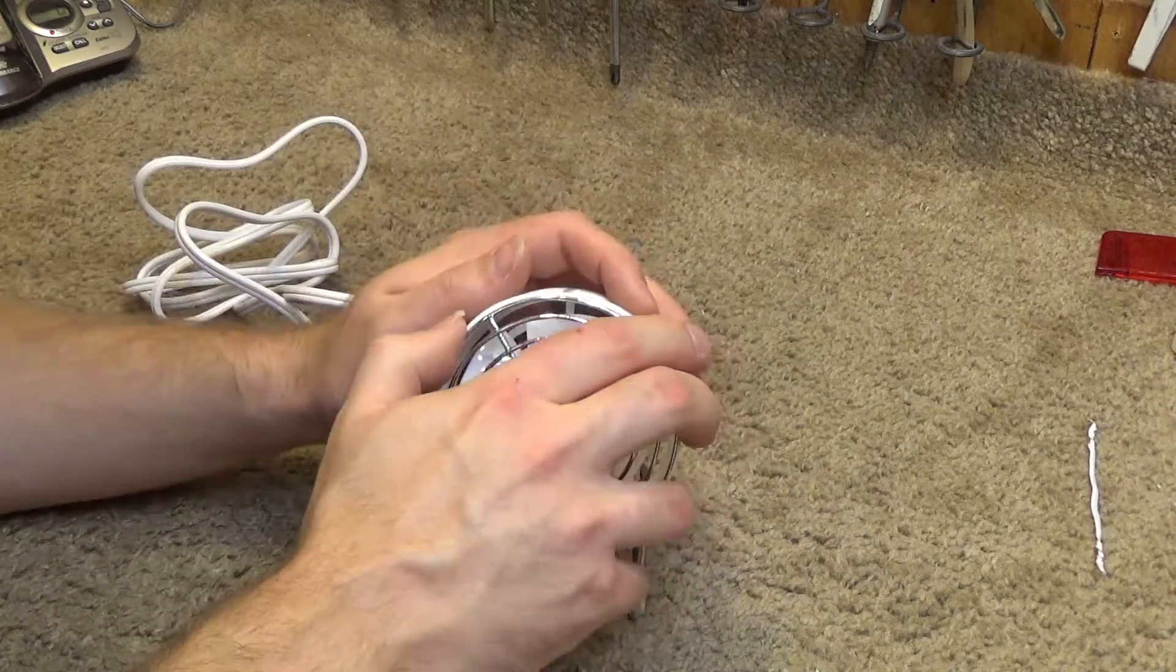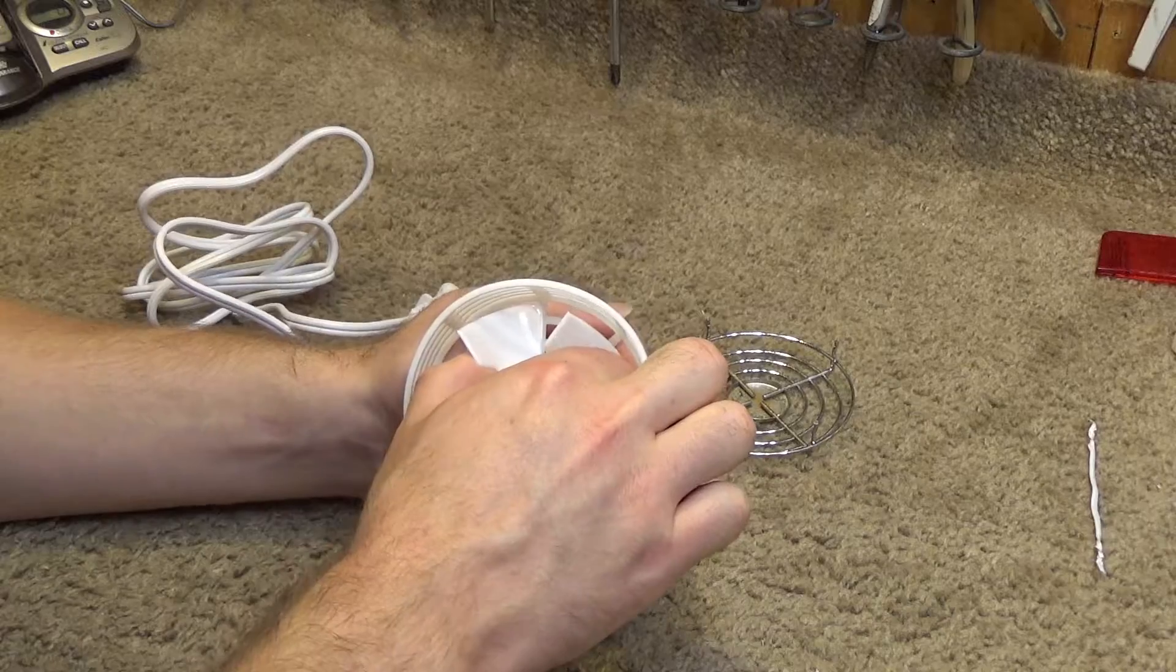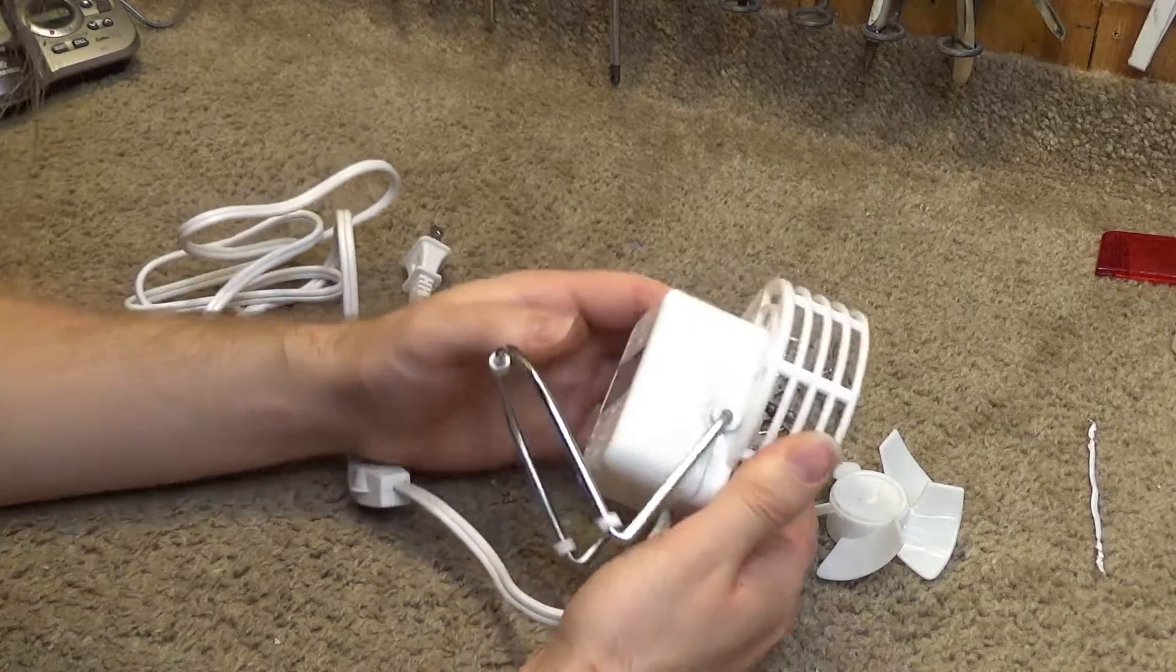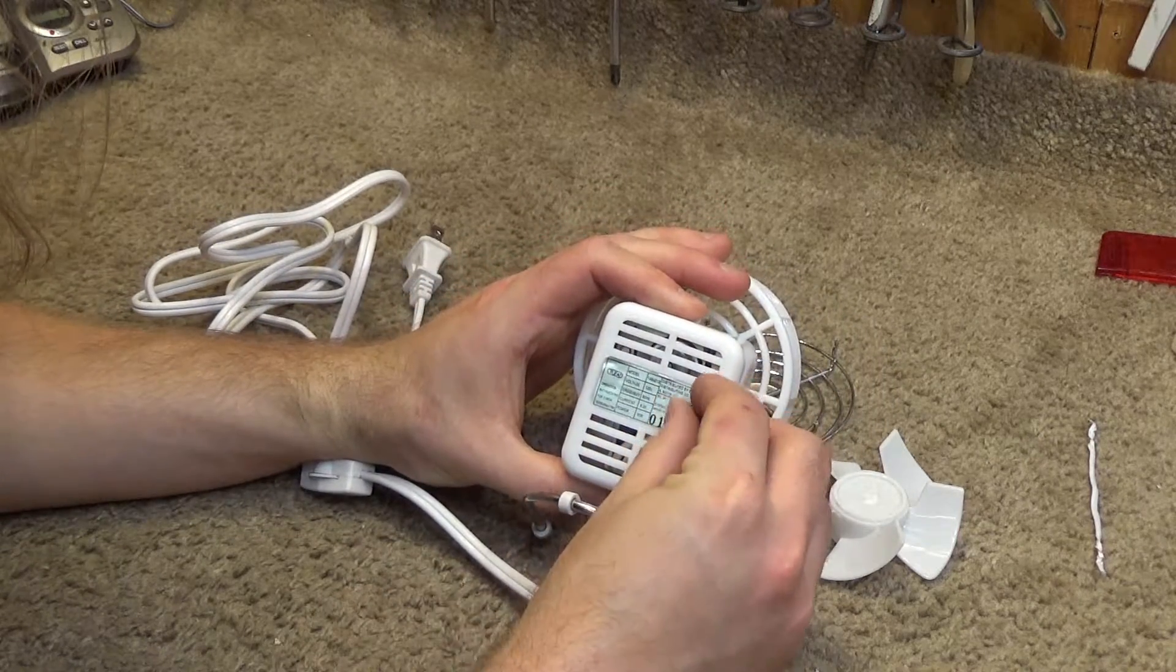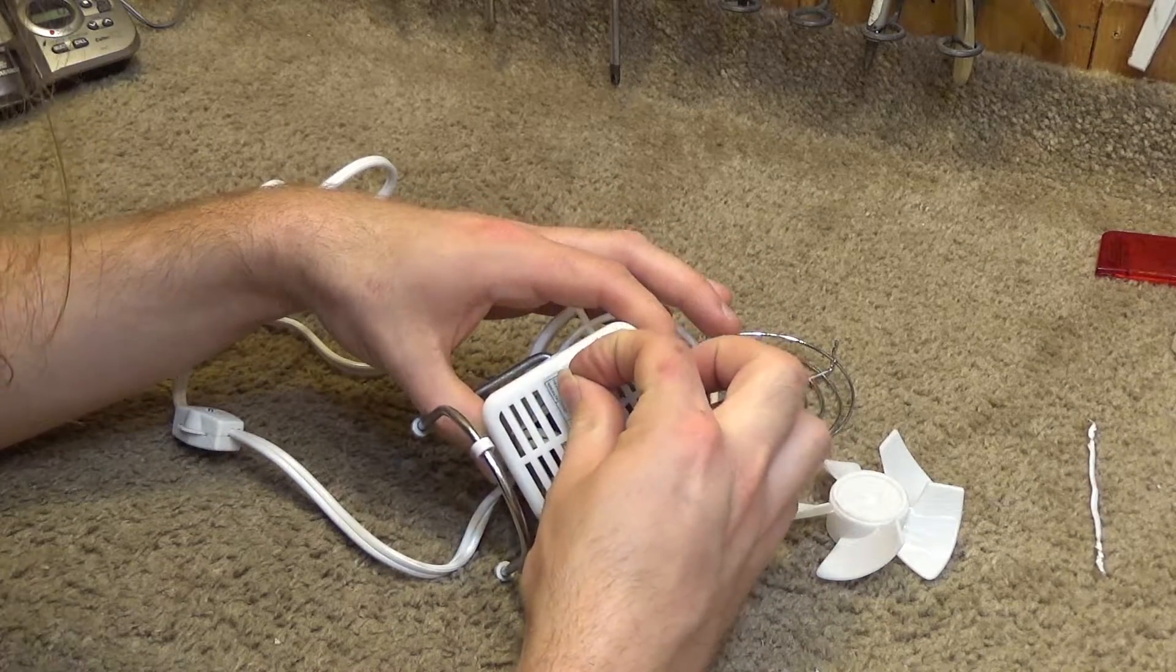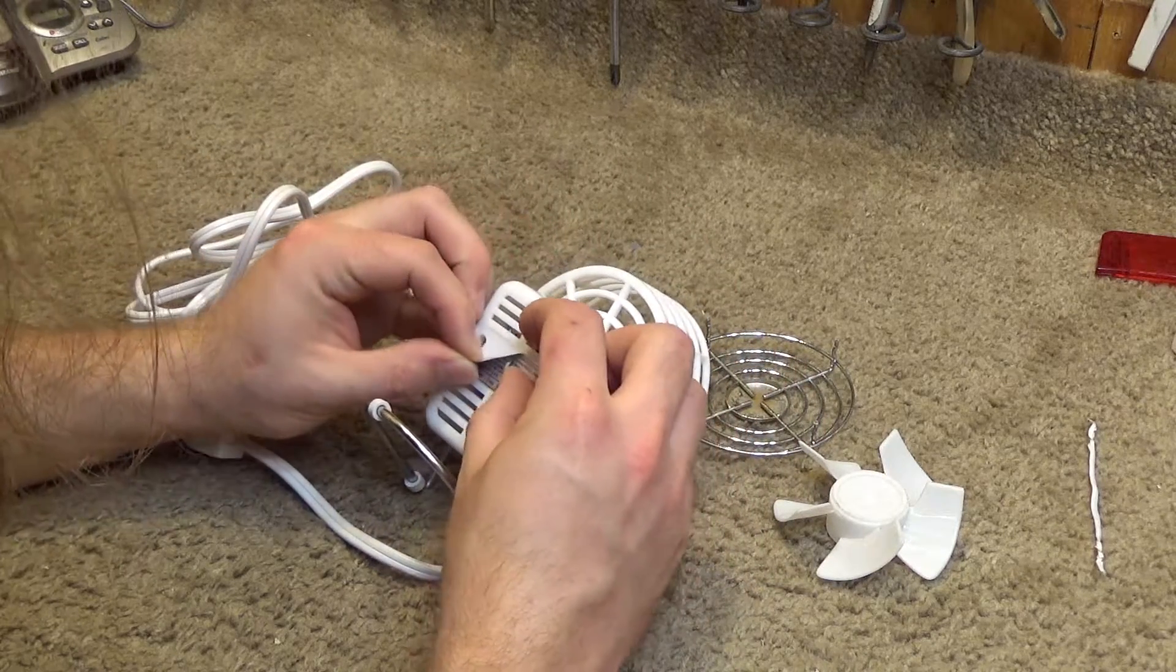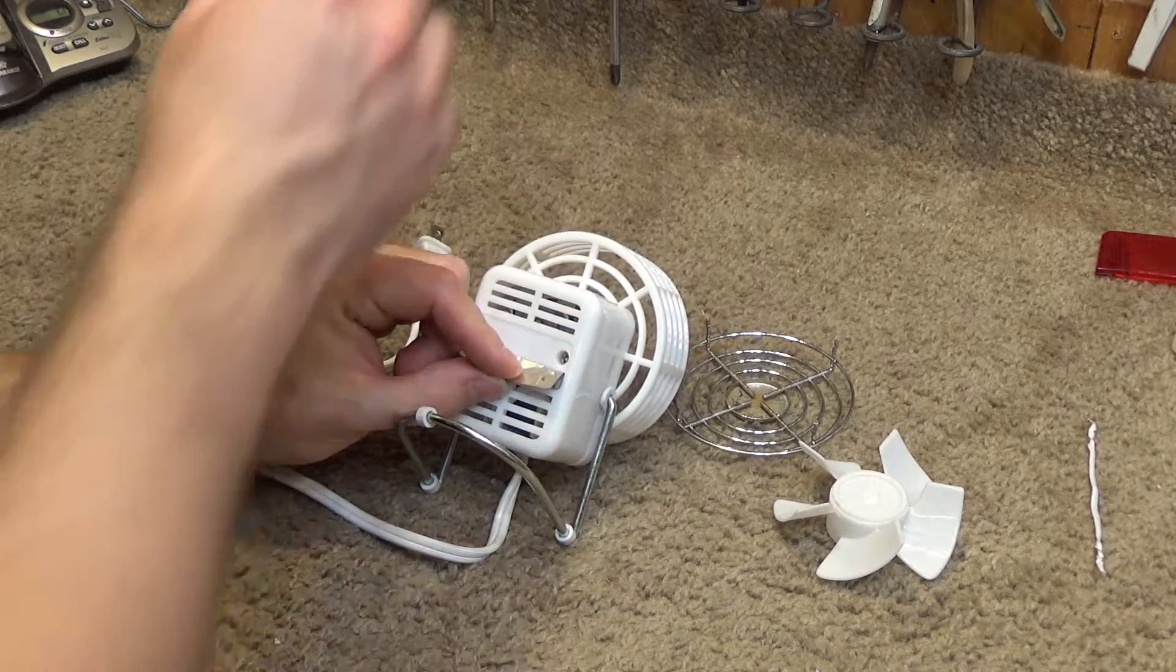Hopefully, the bearings just need a little bit of lubrication and then it'll be good to go. It doesn't appear as though this is designed to come apart unless there's some screws behind this tag, which part of me doesn't want to take off because it'll probably never stick back on correctly again. But there are screws behind there, so let's get those two screws undone.